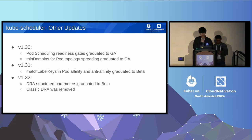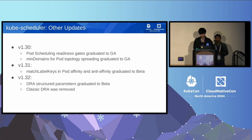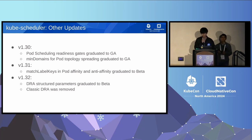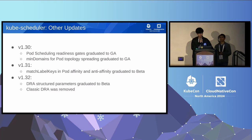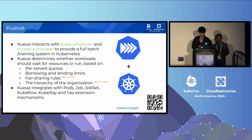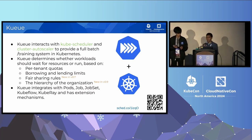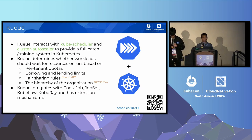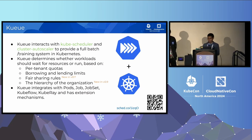Notable recent scheduler updates include: pod scheduling readiness gates graduated to GA, min domains for pod topology spreading graduated to GA, match level keys in pod affinity and anti-affinity graduated to beta, and at 1.32, DRA structured parameters graduated to beta as well, while classic DRA was removed. We didn't go through DRA in detail this time, but if you want to learn more, there is a working group serving presentation later today.